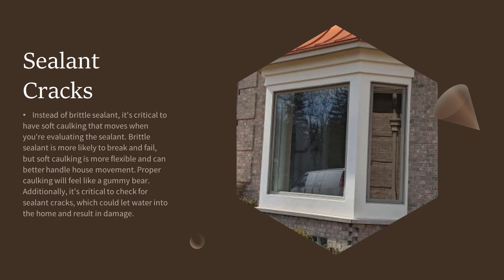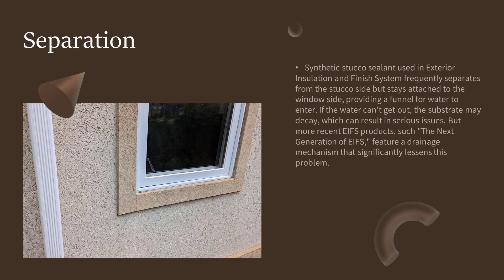It's critical to check for sealant cracks, which could let water into the home and result in damage. Synthetic stucco sealant used in EIFS frequently separates from the stucco side but stays attached to the window side, providing a funnel for water to enter. If the water can't get out, the substrate may decay.